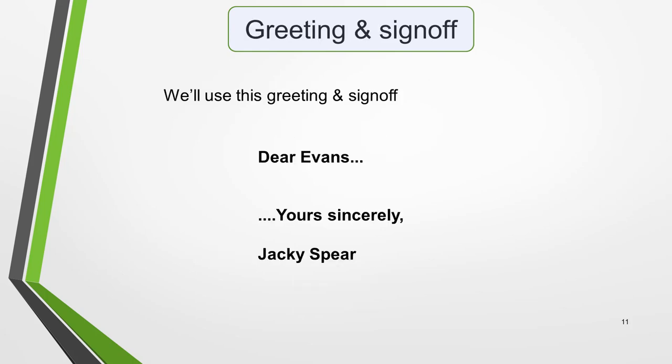For an informal letter to a friend, use one of these phrases followed by your first name: 'All the best', 'See you soon', 'Keep in touch' — for example, 'See you soon, Jackie'. For our letter, we'll use this greeting and sign off: 'Dear Mr. Evans' and 'Yours sincerely, Jackie Spear'.